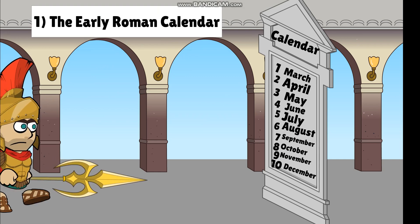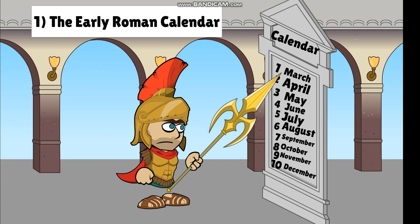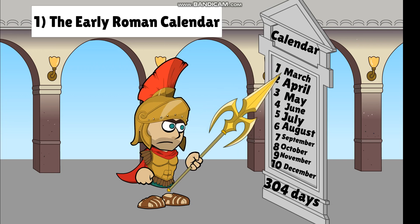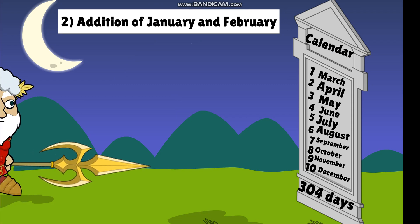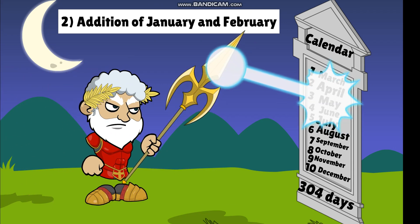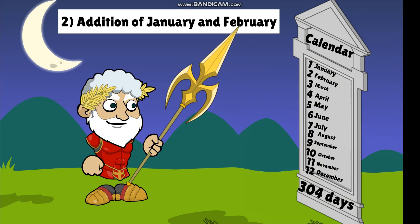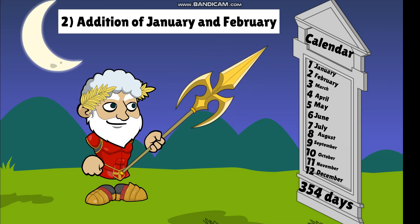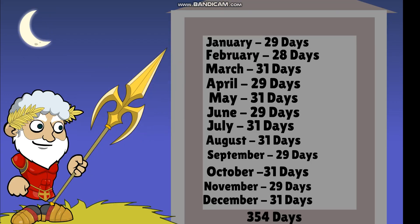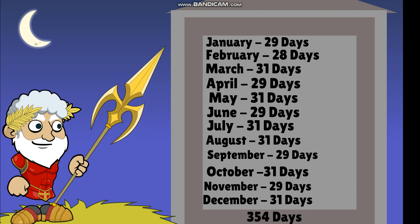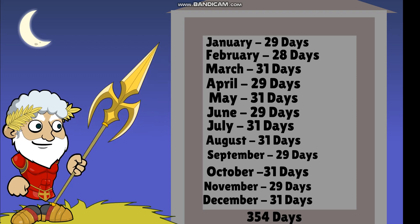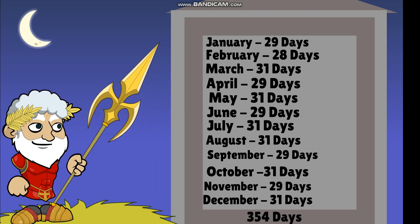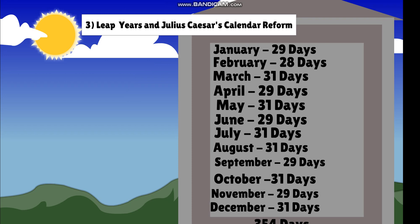First, it's because of the early Roman calendar created by Romulus, which had only 10 months from March to December, totaling 304 days. Second, around 713 BCE, King Numa Pompilius added January and February to the calendar to align the year based on the lunar cycle, making it a total of 354 days in a lunar year. He assigned February 28 days to align with the total of 354 days, possibly because even numbers were considered unlucky in Roman culture.